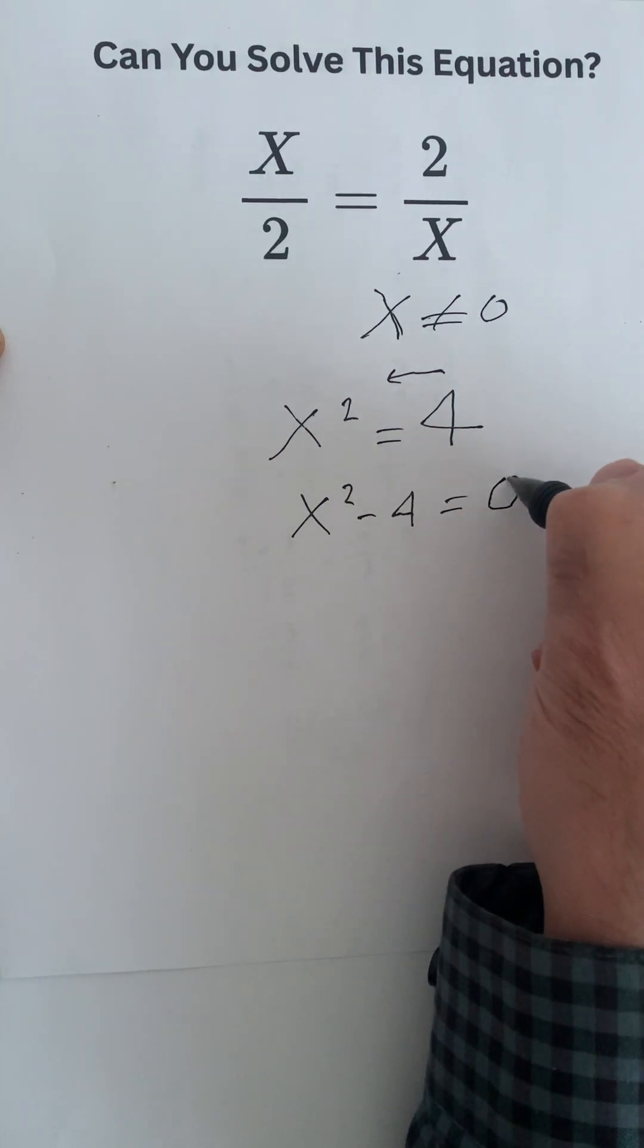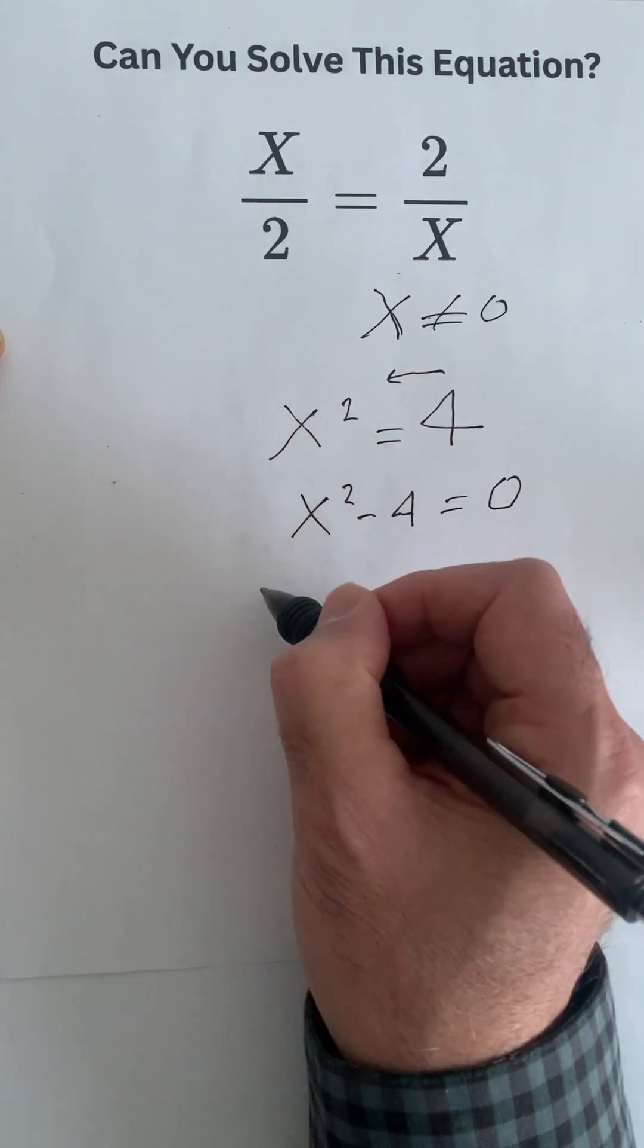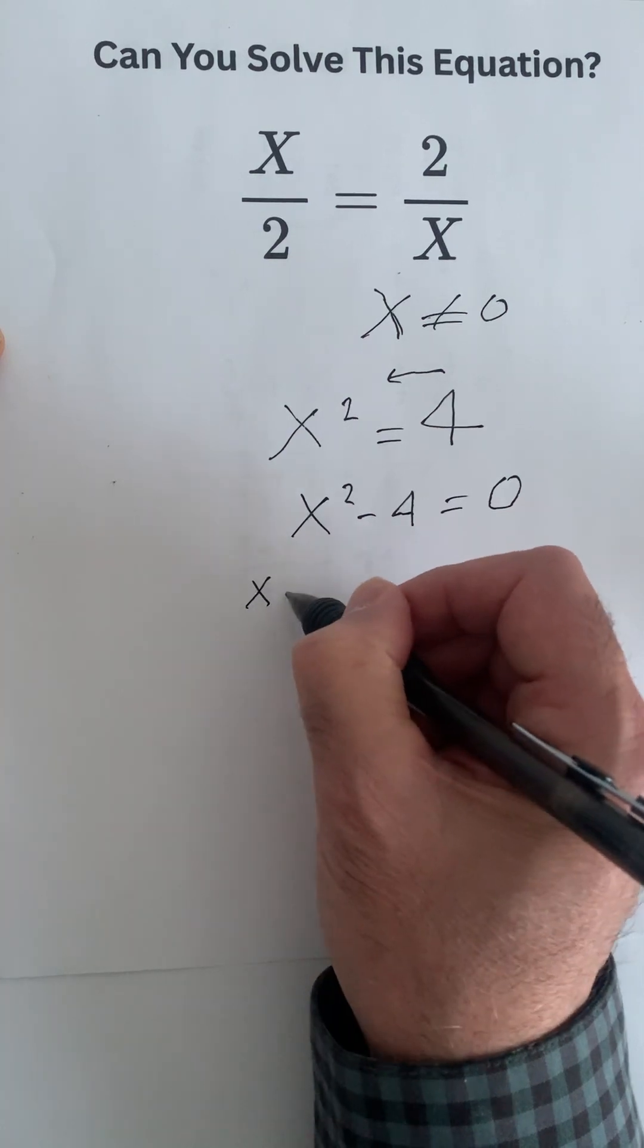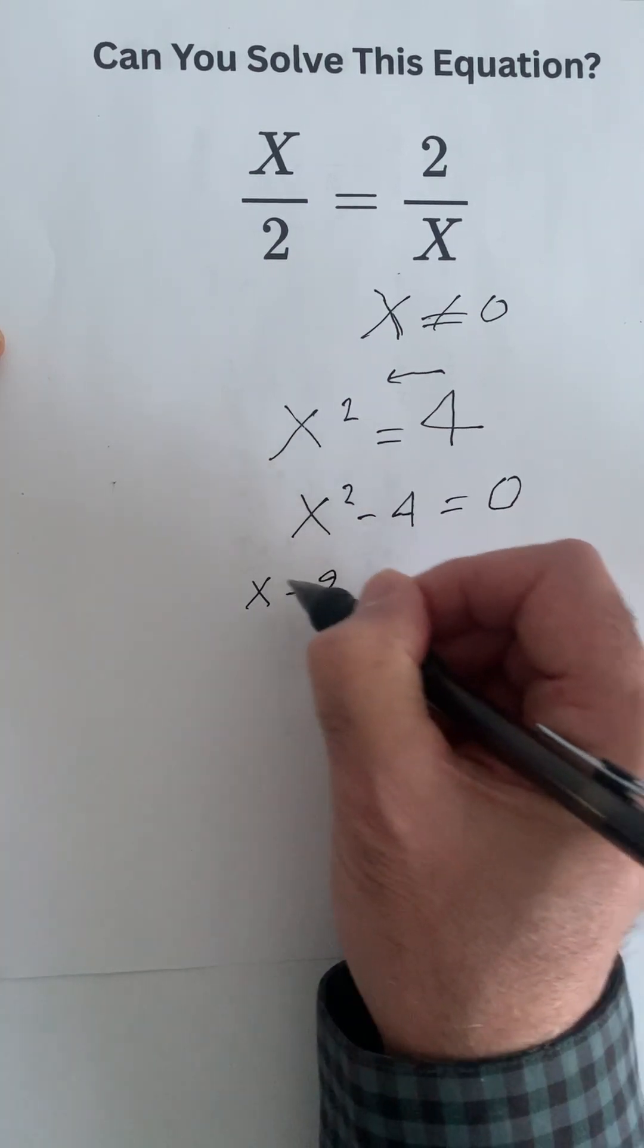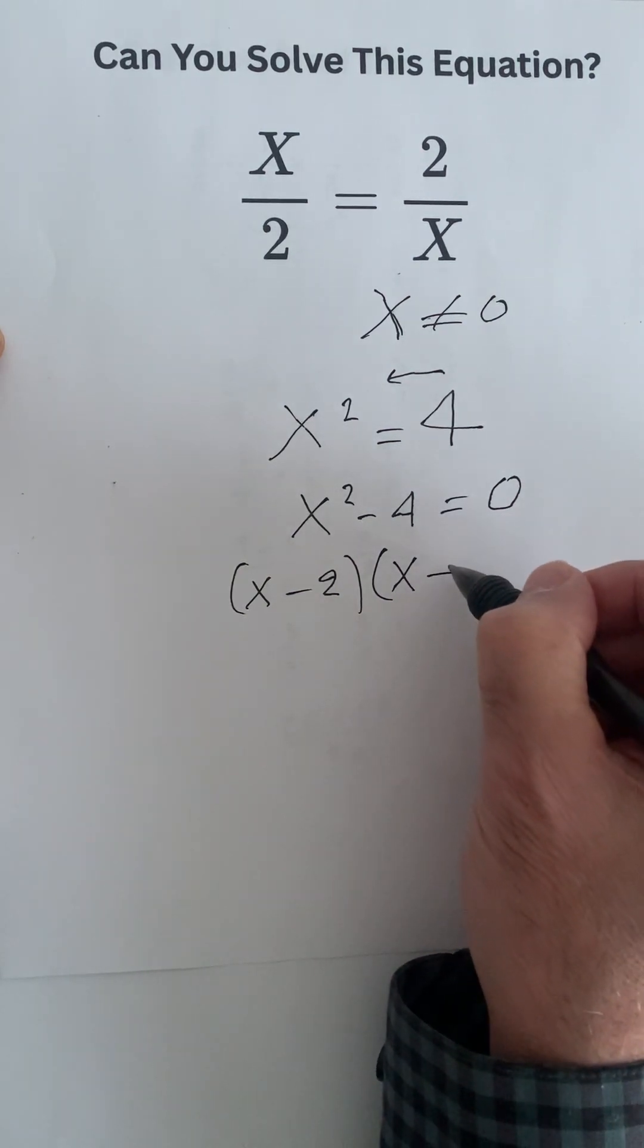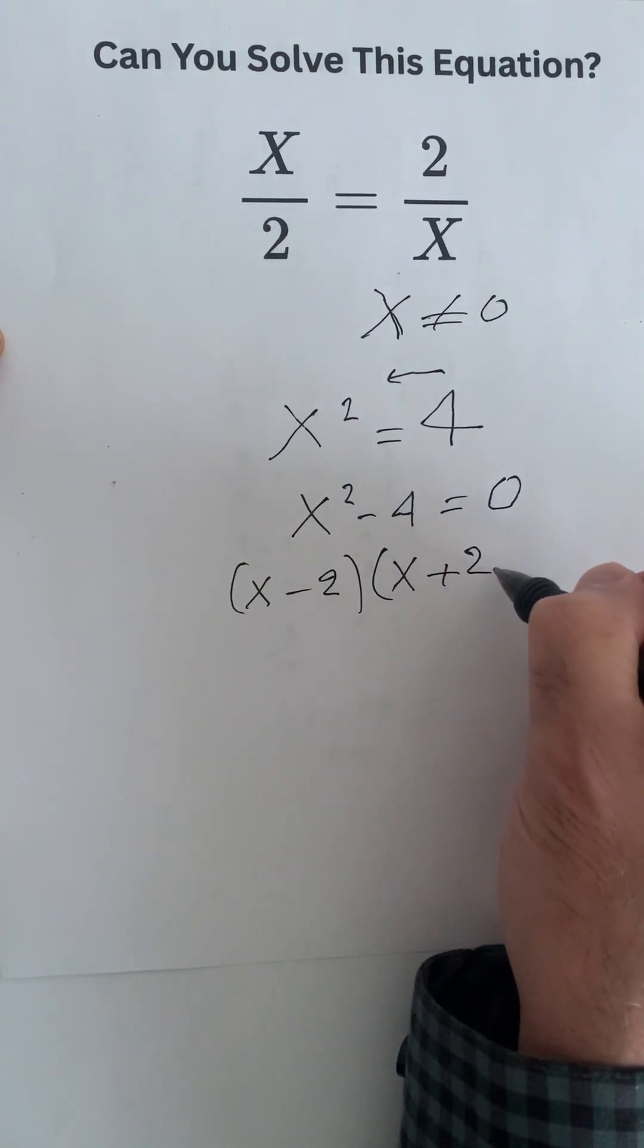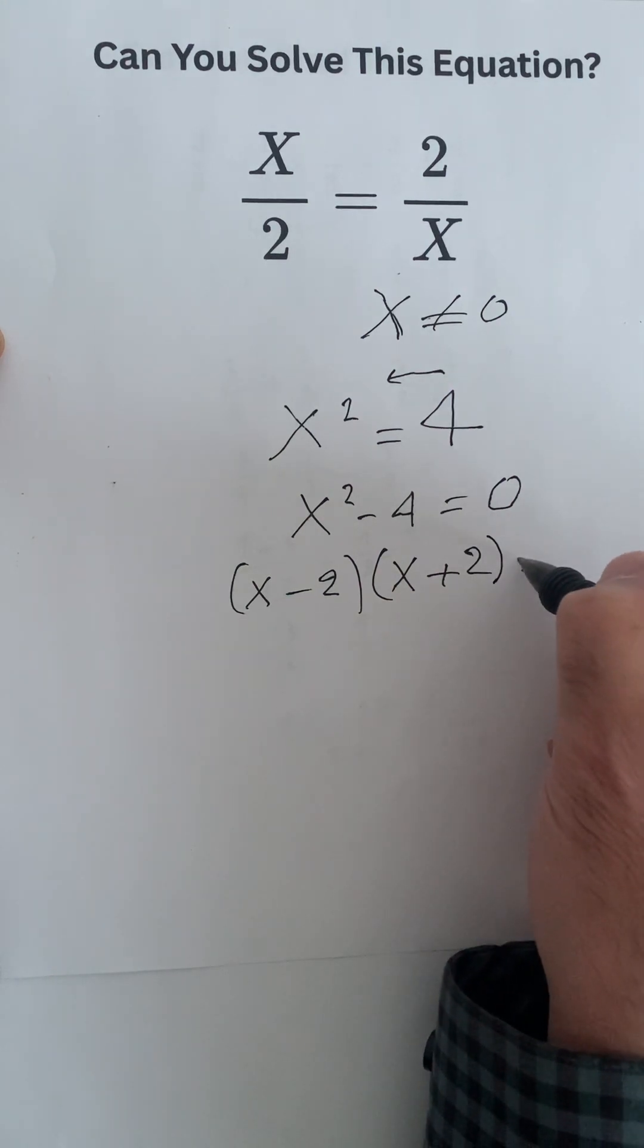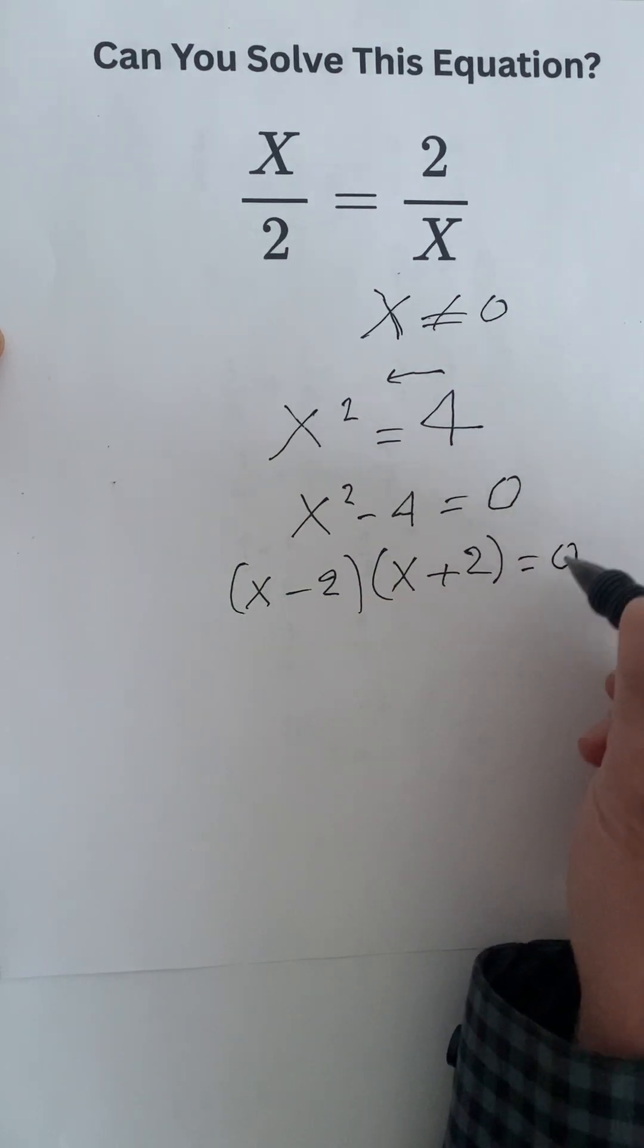And in this case we have the difference of two squares, so we can write it as x minus 2 times x plus 2, and this is of course equal to 0.